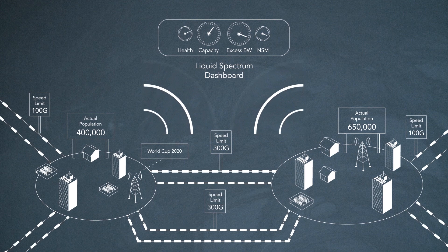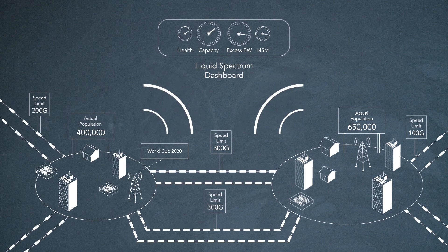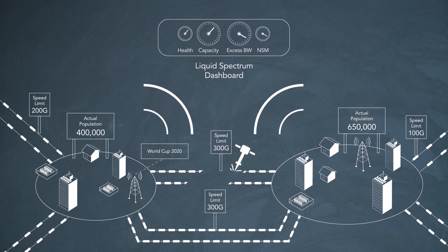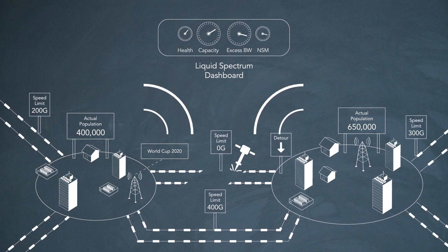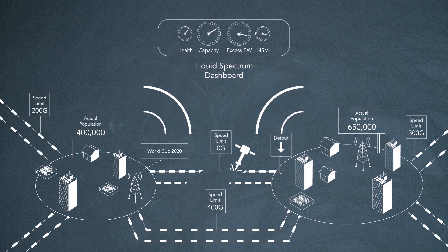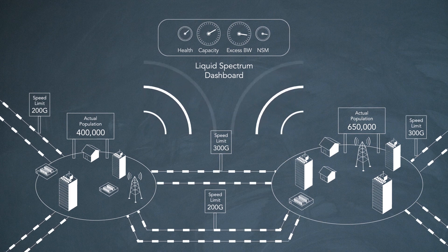An operator can use Liquid Spectrum to accelerate time to market when faced with unpredictable service demands, improve service availability during disaster recovery, or dynamically move bandwidth flexibly across the network as needed to address mobile capacity requirements, minimizing the need to deploy redundant hardware resources.